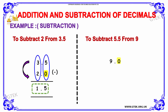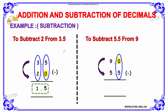Let's move on to the next example. The question is to subtract 5.5 from 9. We have written 9 by adding a 0, making it 9.0, and the second term is 5.5.